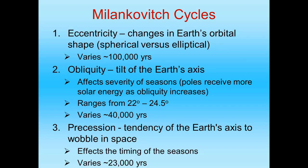Second, obliquity: the tilt of Earth on its axis, which affects the severity of the seasons. That angle ranges from about 22 to about 24.5 degrees; right now we're at about 23.5 degrees from vertical. If you change that angle even a little bit, summers and winters could be more severe because the amount of insolation changes as obliquity changes. Obliquity varies every 40,000 years, so again this is not short-term variability.